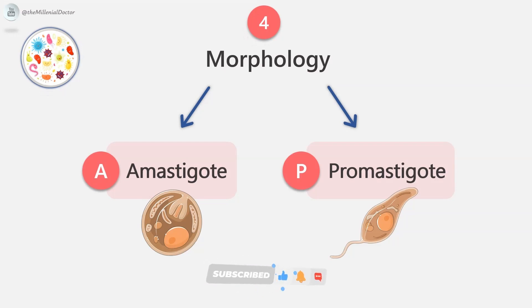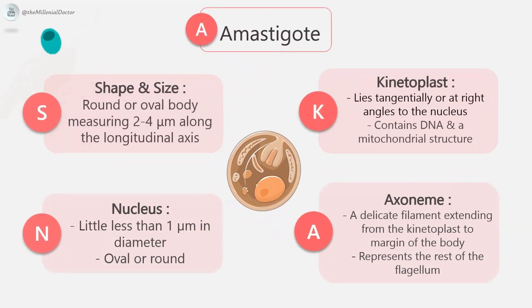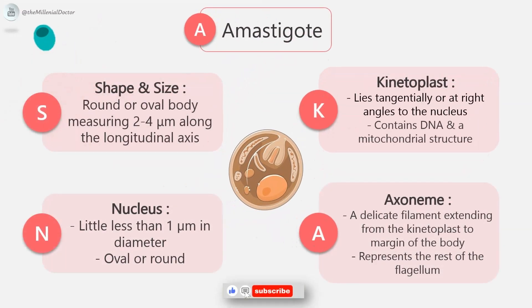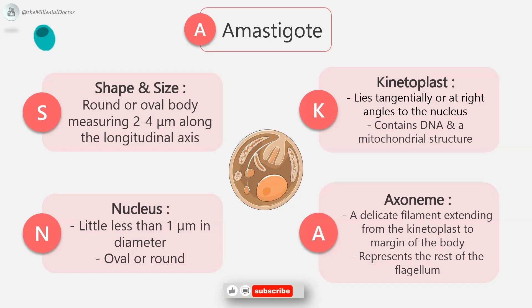Morphology: The parasite exists in two forms — the amastigote form, seen in humans and other mammals, and the promastigote form, seen in the sandfly and in laboratory culture. The amastigote is also called the non-flagellate form. It occurs in the infected lesions of man in reticuloendothelial cells (RE cells), and is also called the LD or Leishman-Donovan body. It is a round or oval body measuring 2 to 4 micrometers along the longitudinal axis.